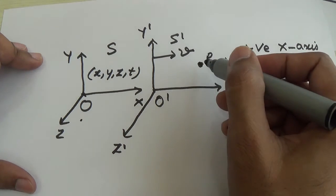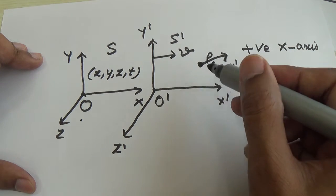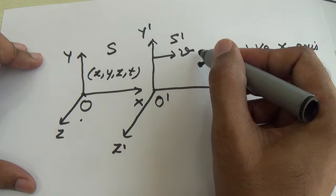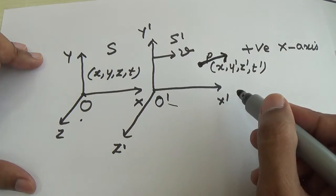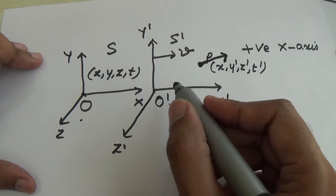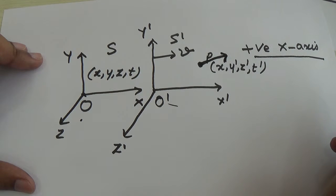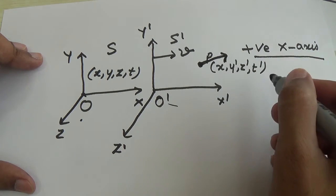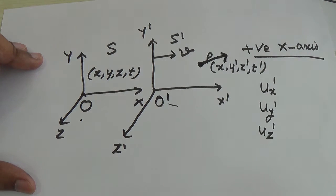Now suppose there is a particle or any other object moving in the forward direction with respect to the O prime observer. Any particle or object in the S prime frame moving along the positive axis — moving in the forward direction. One can find out the velocity components for this particle: ux prime, uy prime, and uz prime along the x, y, and z axes. The particle is in free space and assumed to move in the forward, positive direction. I have considered the prime frame because this particle is in the S prime frame and moving in the x direction. And ux prime is the velocity according to the O prime observer.